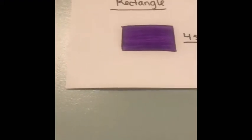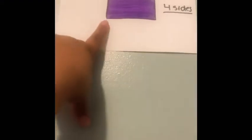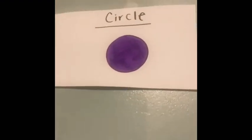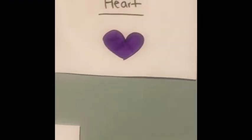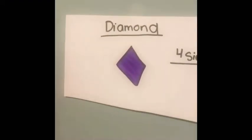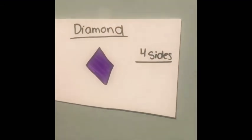shape of a circle but a skinny circle. The third shape is a rectangle — it has one, two, three, four sides. Our fourth shape is a circle. Our fifth shape is a heart. And our last shape is a diamond, which